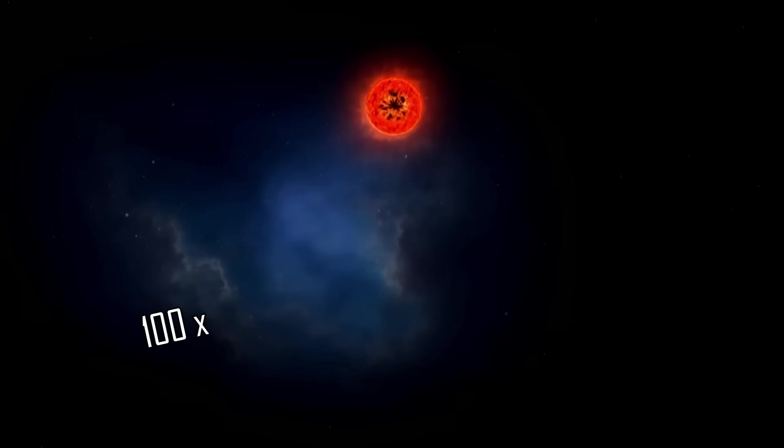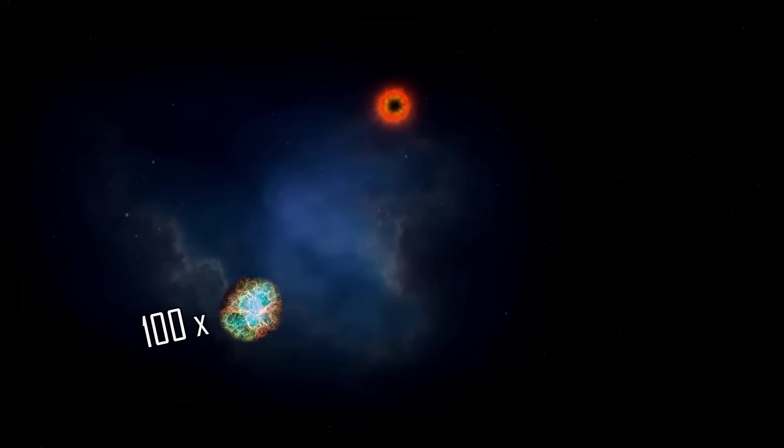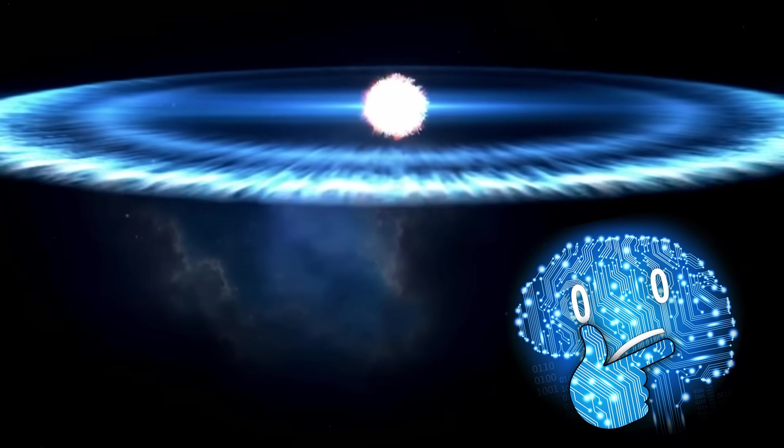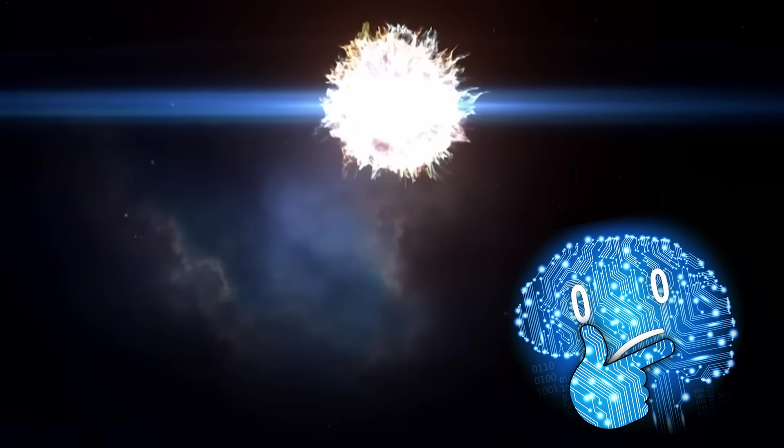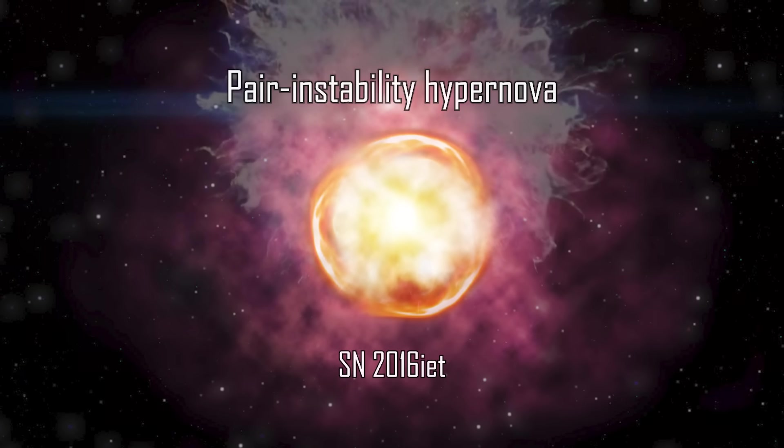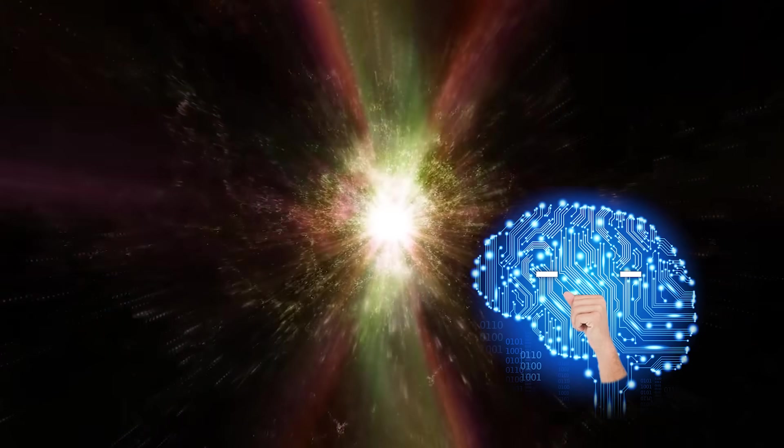Hypernovae are about 100 times more energetic than supernovae, and if the latter happens once per century in our galaxy, we shouldn't expect to see a hypernova for a couple million years. Sometimes they are so strong, referred to as a pair instability hypernova, that the entire star is obliterated, leaving no remnant behind. On second thoughts, please don't do that dear sun.